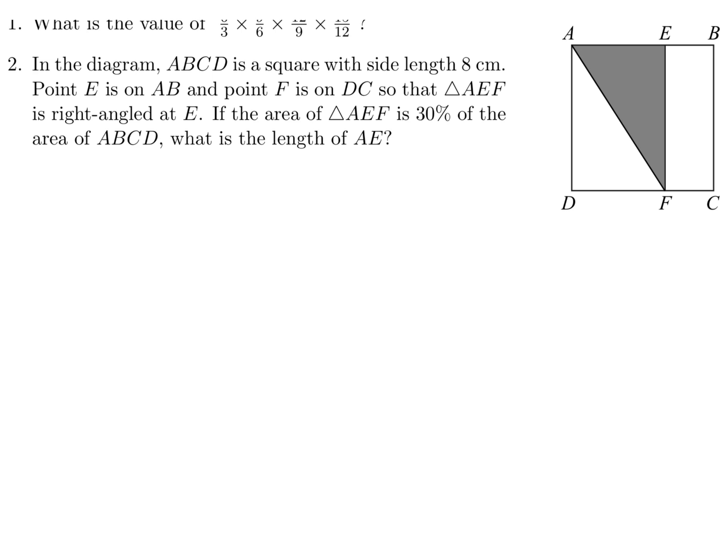In the diagram, ABCD is a square with side length 8. Point E is on AB and point F is on DC so that triangle AEF is right angled at E. If the area of triangle AEF is 30% of the area of ABCD, what is the length of AE?